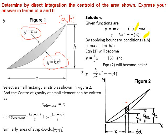Now applying the boundary conditions at point (a, h). For equation 1, y = mx becomes h = ma, so m = h/a. We can rewrite equation 1 as y = (h/a)x. Similarly, equation 2 at the boundary condition becomes h = ka², so k = h/a². We rewrite equation 2 as y = (h/a²)x².